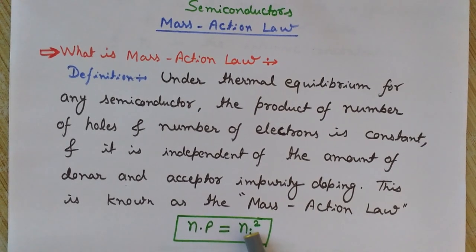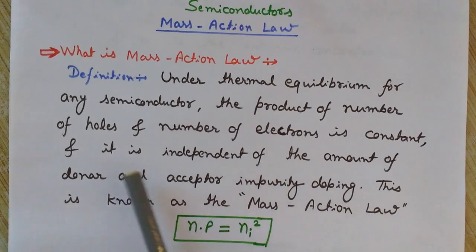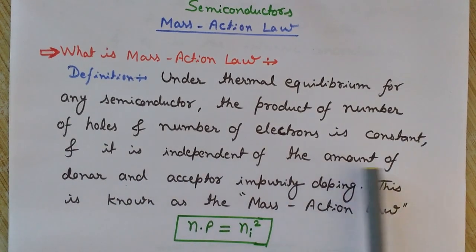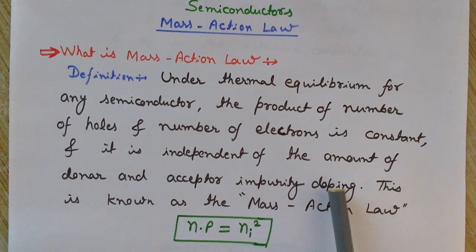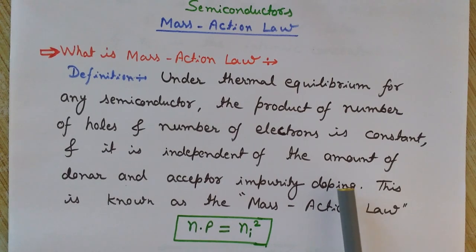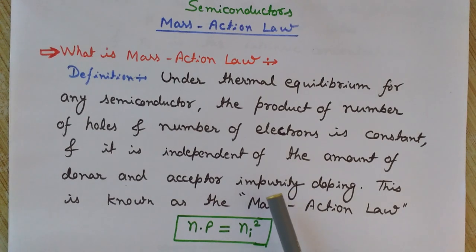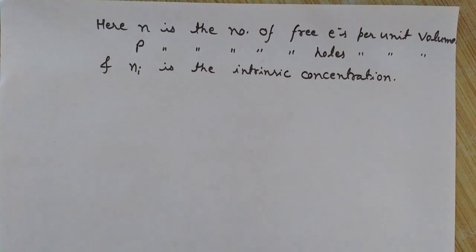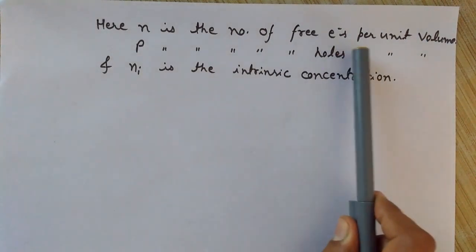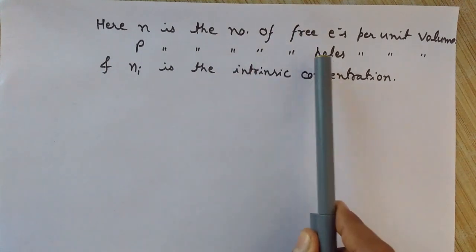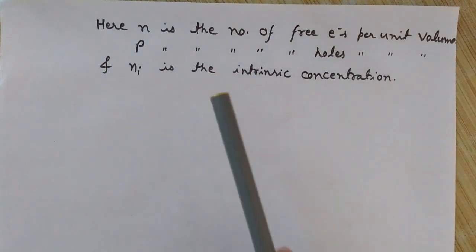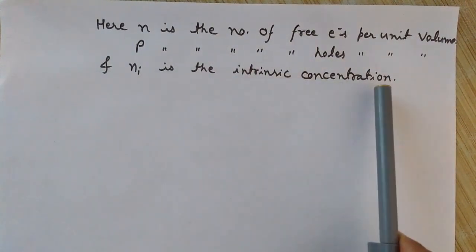This product is independent of the amount of donor and acceptor impurity doping. Even if you keep increasing the acceptor or donor atoms — p-type or n-type impurities — the product will remain constant. Here, n is the number of free electrons per unit volume, p is the number of free holes per unit volume, and ni is the intrinsic concentration.